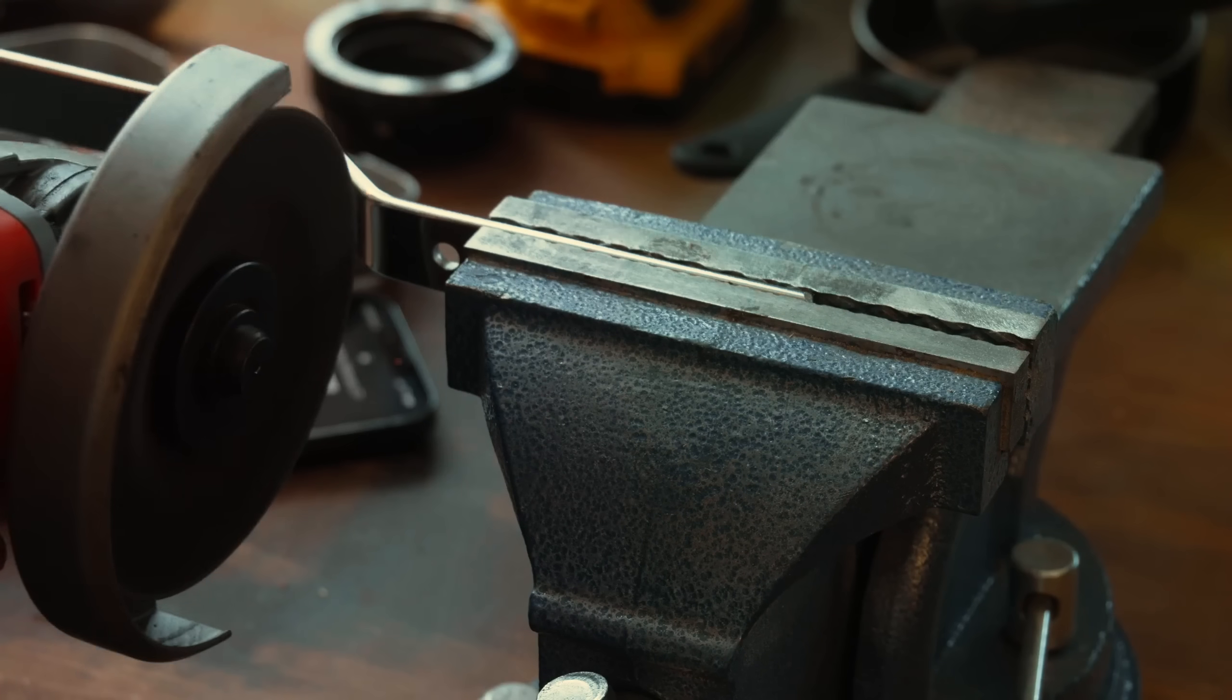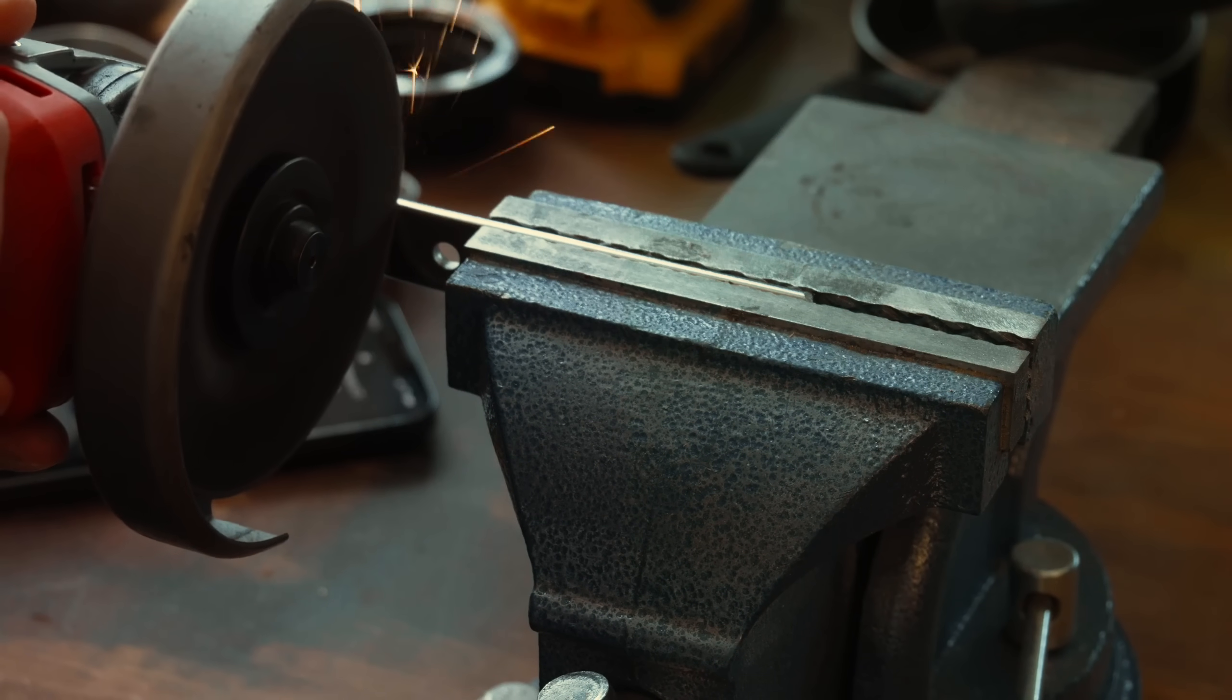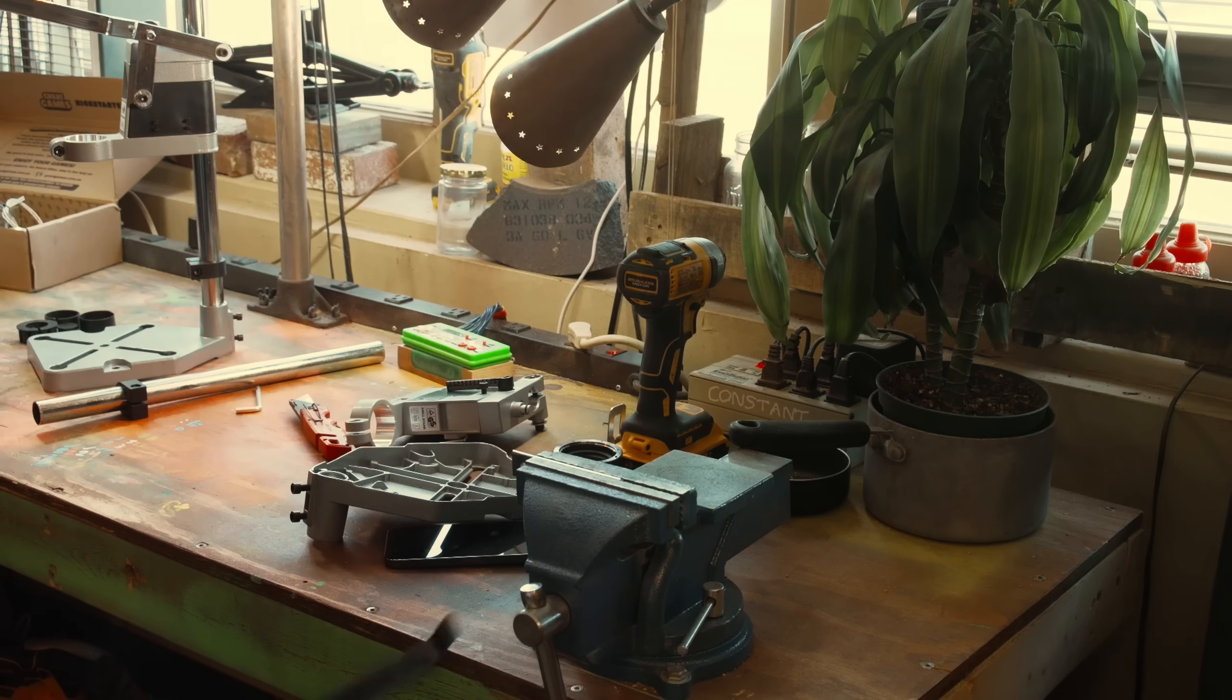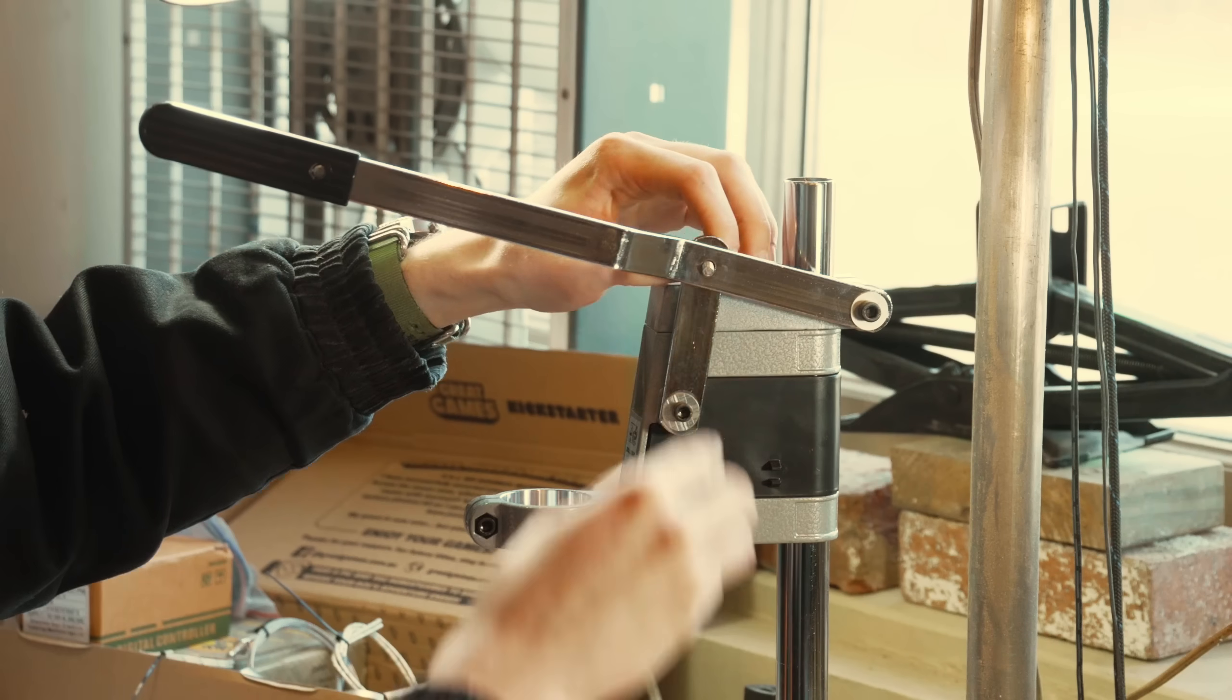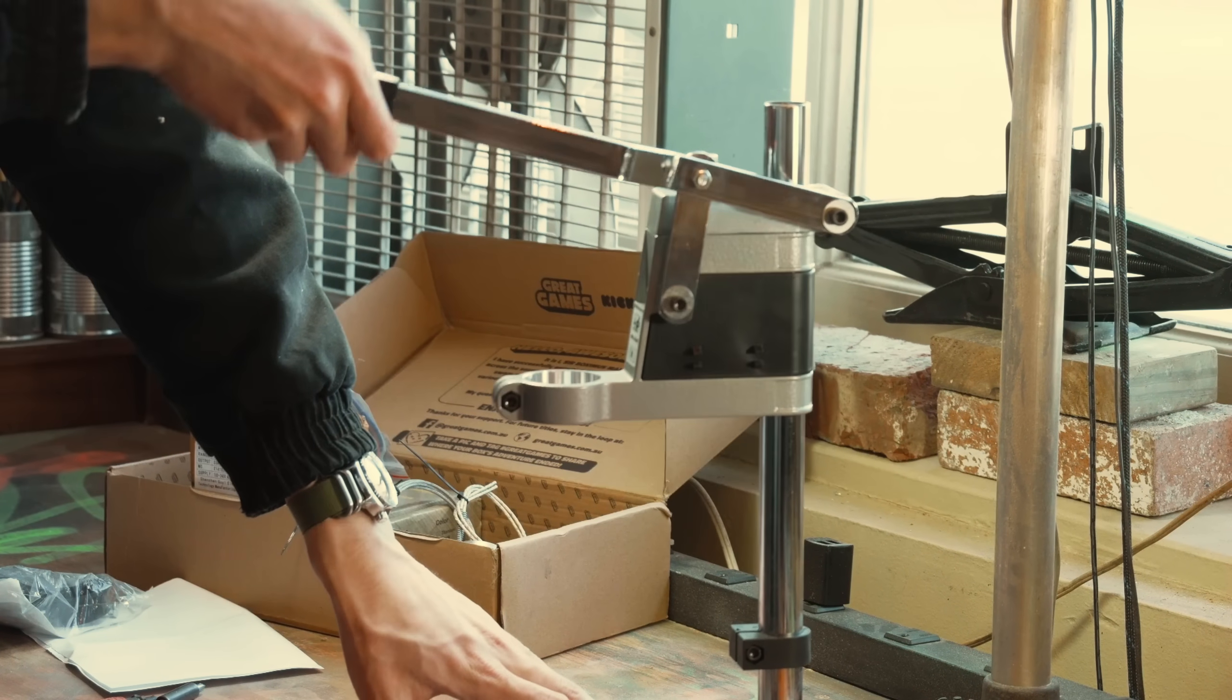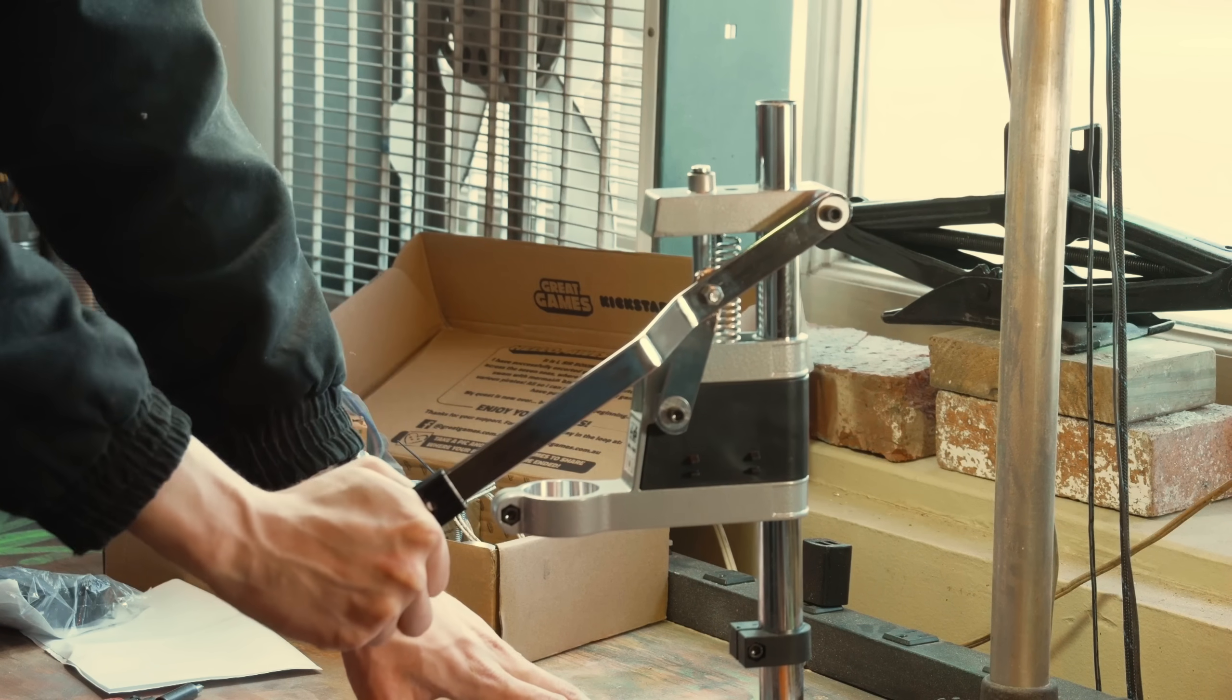I'm making a longer bracket from the handle of the second press, which should give the up and down motion a little bit of extra range. This press is going to become a plastic injection molder, and the longer range of motion it has, the more plastic I can move.